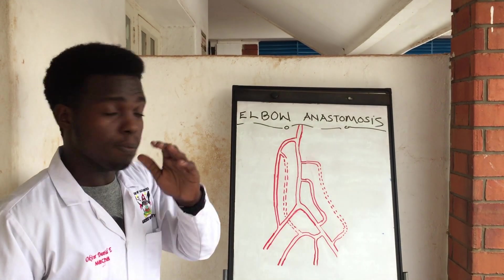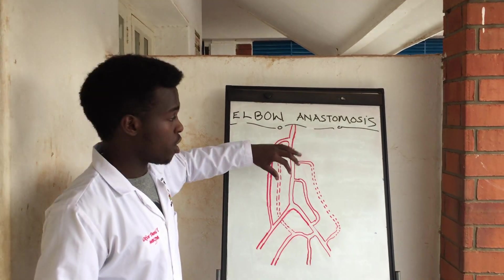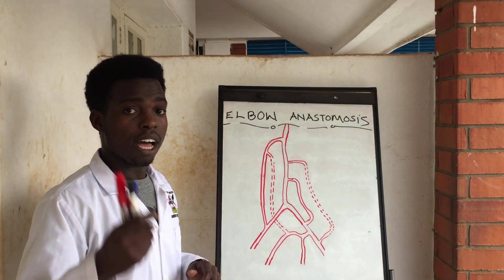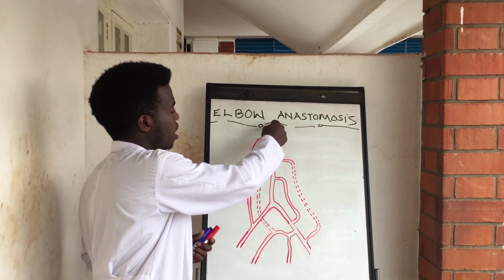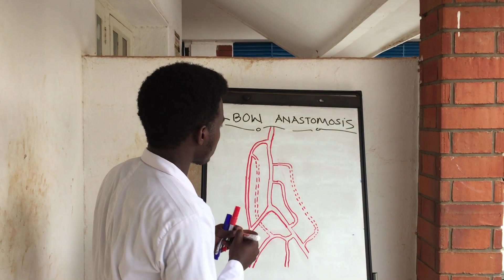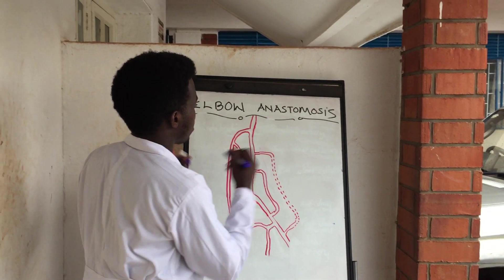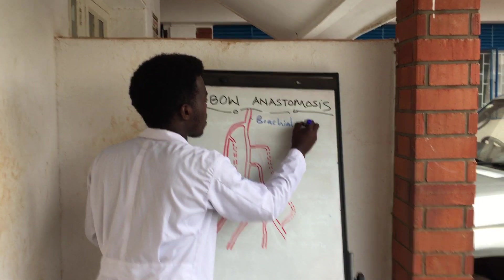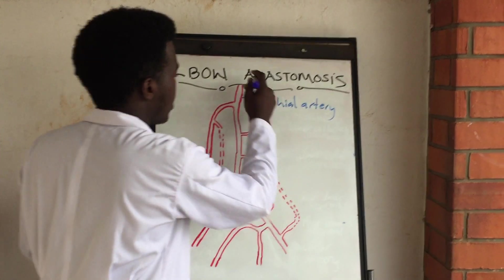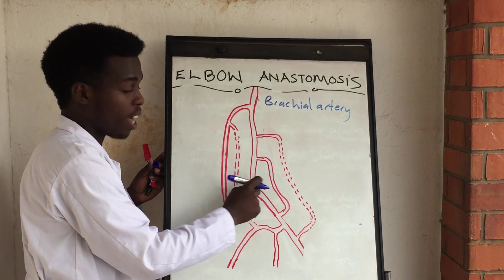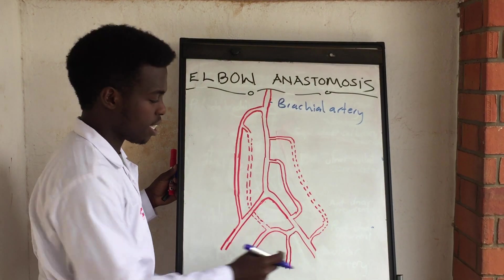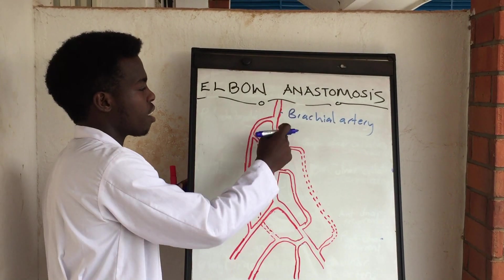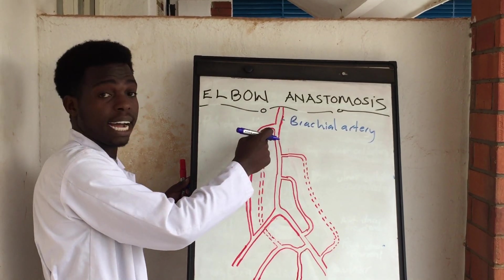The elbow anastomosis is made mainly by the brachial artery, which is a continuation of the axillary artery, which also comes from the subclavian artery. This is our brachial artery here. The brachial artery bifurcates to give the main branches — that is, the ulnar artery and the radial artery — but first the brachial artery gives off the profunda brachii artery, which is a deep artery.